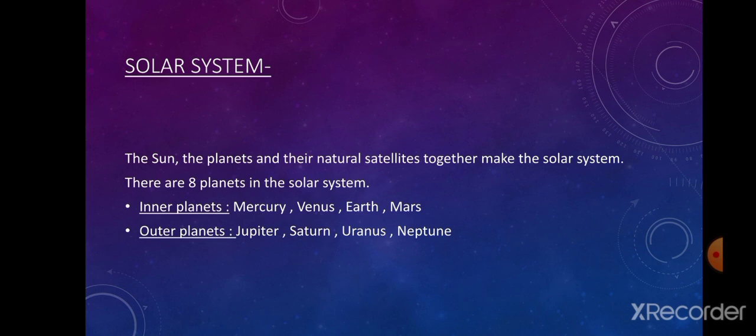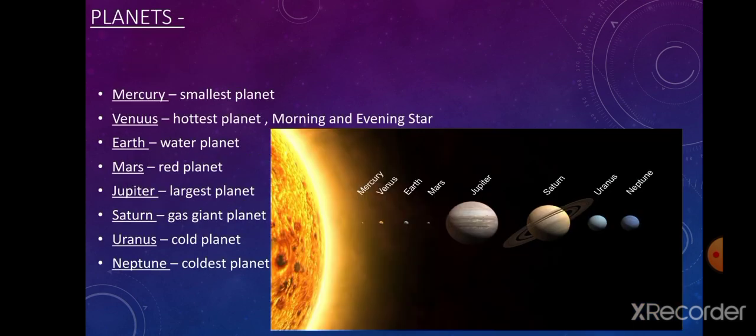At night when we look at the sky, we see tiny dots — these are stars and planets. The twinkling ones are the stars, and those that do not twinkle but just shine are the planets. Planets do not have their own light; they reflect light from the sun. There are eight planets in our solar system, and all planets fall into two groups: the outer planets and the inner planets.